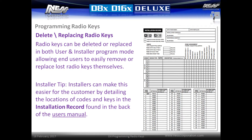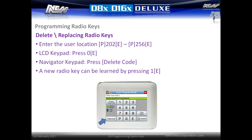Radio keys can be deleted or replaced in both user and installer programming mode, allowing end users to easily remove or replace lost radio keys themselves. Installers can make this easier for the customer by detailing the locations of codes and keys in the installation record found in the back of the user manual. To delete or replace a radio key, enter the user location p202e to p256e. On an LCD keypad press 0e; on the Navigator keypad press the delete code button. A new radio key can then be learned into the user location.